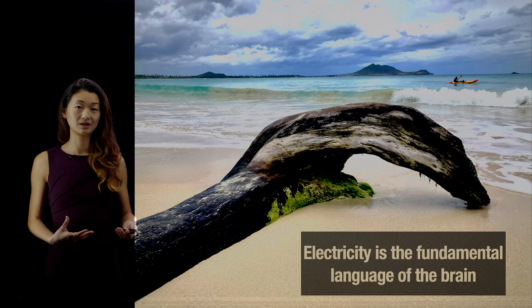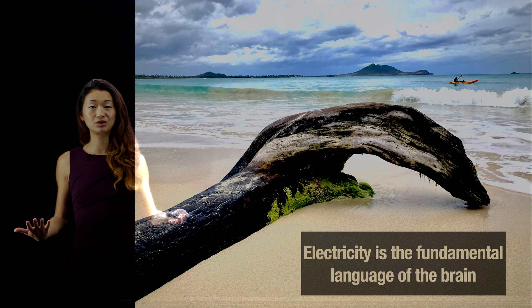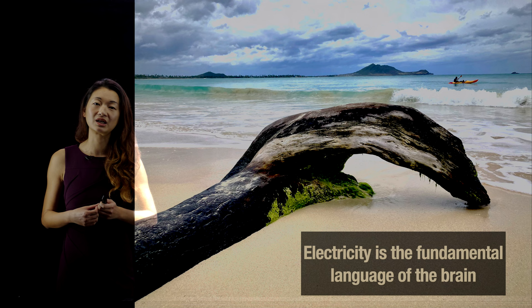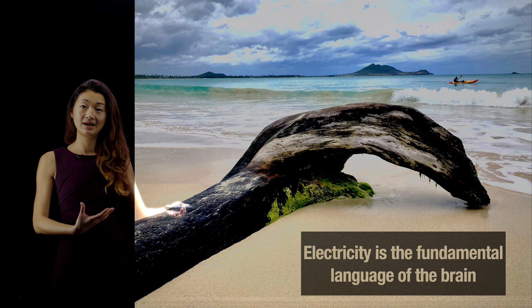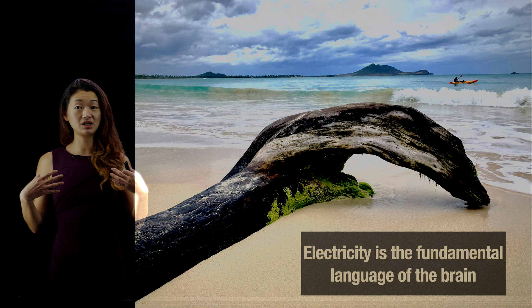So let's say you find yourself in a lovely location like the beach. How do you even know where you are? It turns out that electricity is a fundamental way in which your brain represents information — sensory information that we get from the external world. For example, the fact that the sky is blue and the ocean is this lovely shade of turquoise. You know that because the photons of those respective wavelengths hit the photoreceptors in your eye, which translates that information into electricity. You might hear that the waves are crashing onto the beach.